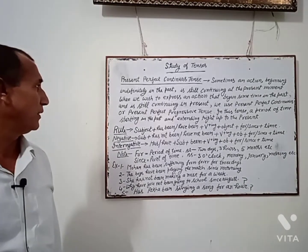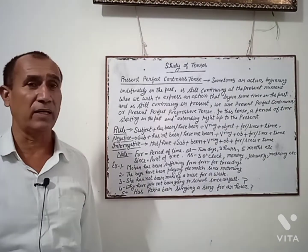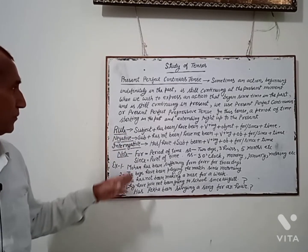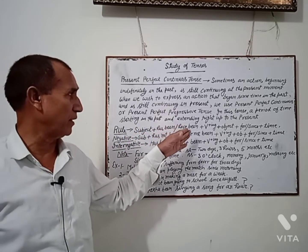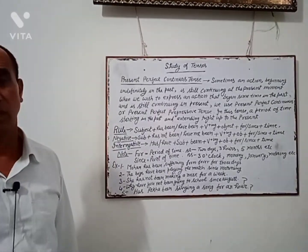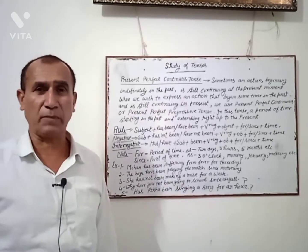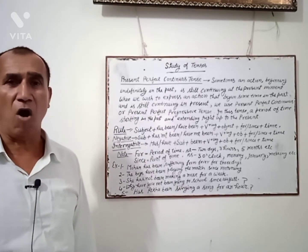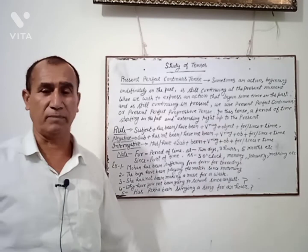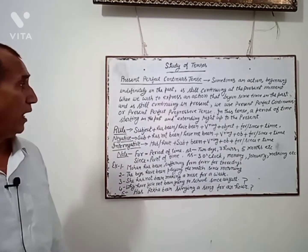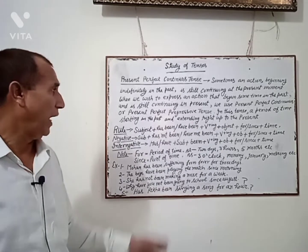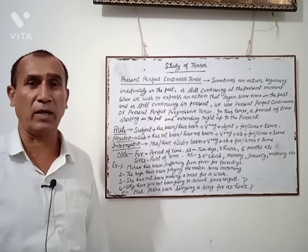The rule is: Subject + has been / have been + V-ing + Object + for/since + time. Has been is used for singular number subjects, and have been is used for plural number subjects.